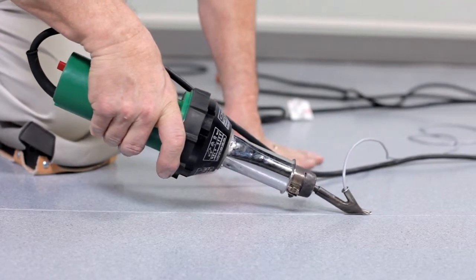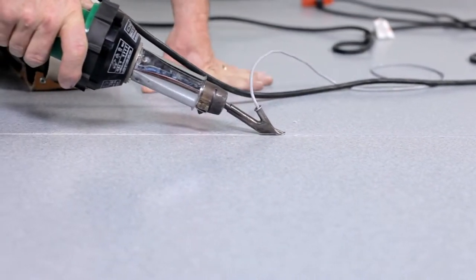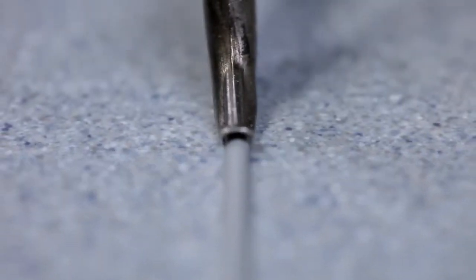Heat welding is a function of temperature and speed. The rod should be well bonded to the sheets without scorching the edges of the seam cut. There should be a slight ridge or crinkle at both edges of the rod.